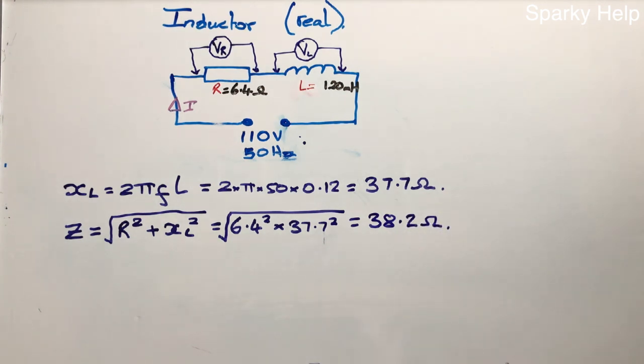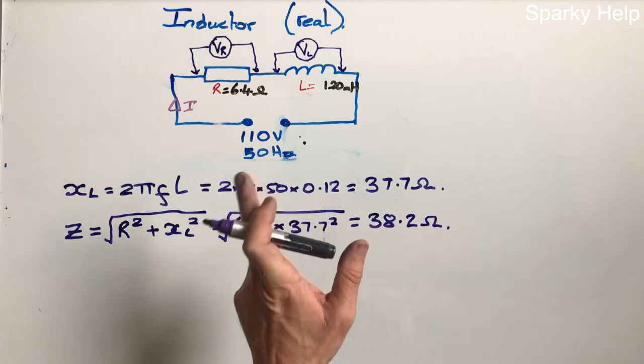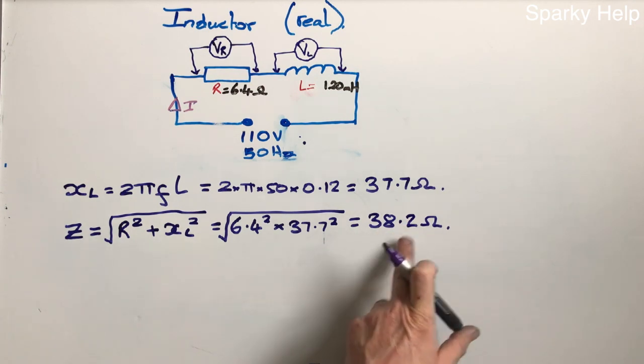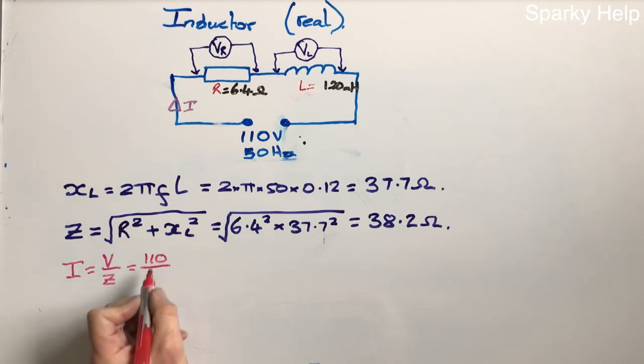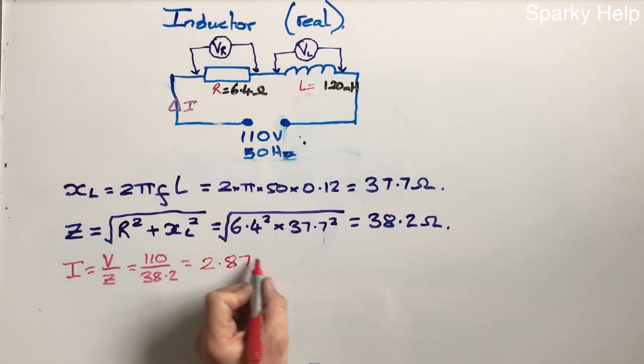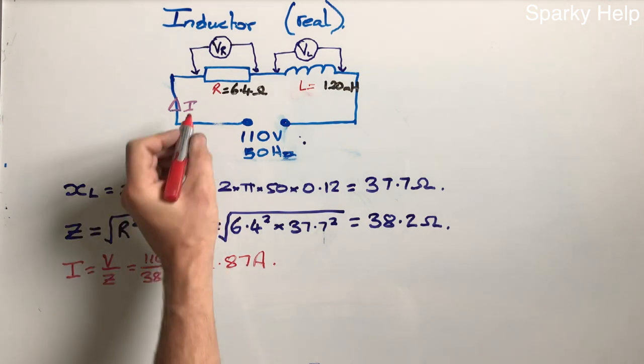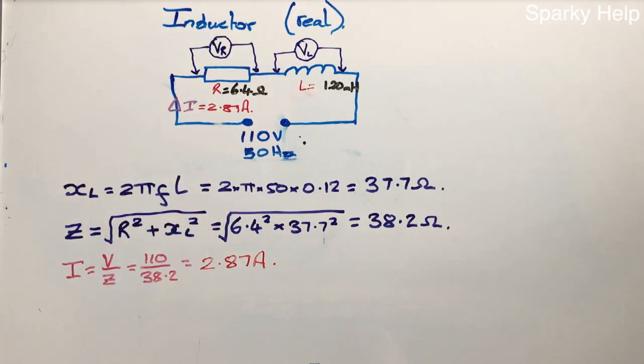So we get 38.2 ohms as the impedance of the circuit. This is the total opposition to current flow. This can now be used to work out I. We're going to use Ohm's law, not moving away from that. So I is V divided by the total, which is Z. This is 110 divided by 38.2, and that gives us 2.87 amps. That is how much current will flow here, and being a series circuit, that remains constant.